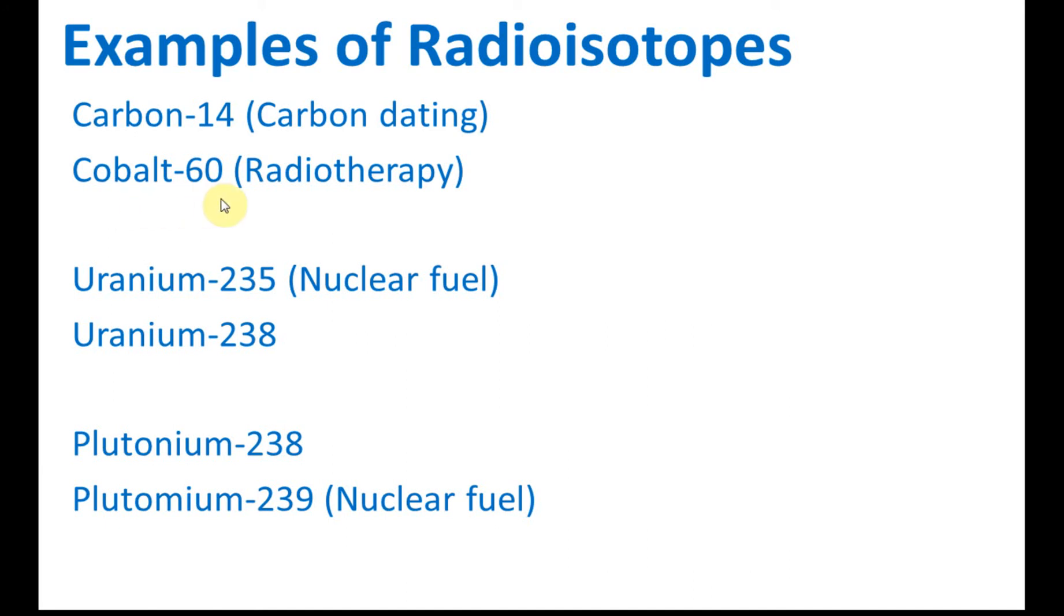Then we have Uranium-235 and Plutonium-239. These two are nuclear fuel which is used in nuclear plants to produce electricity. So these are the substances that we use to produce nuclear energy and generate electricity in nuclear energy plants. We also have Uranium-238 and Plutonium-238, which have little use, but you also need to know they are radioisotopes. Make sure that you remember the names of these radioisotopes because this may be asked in your test or exam.